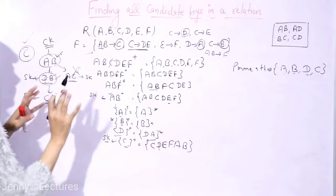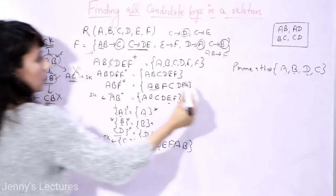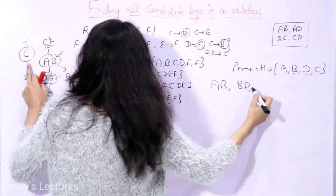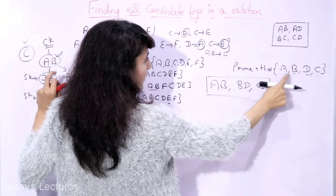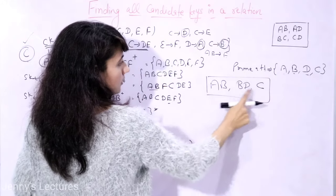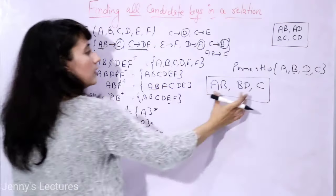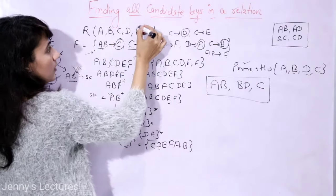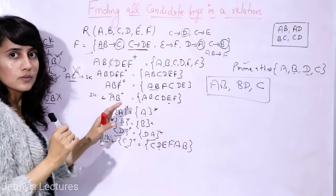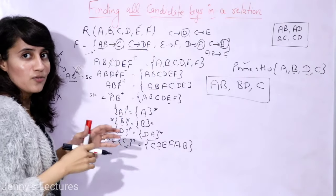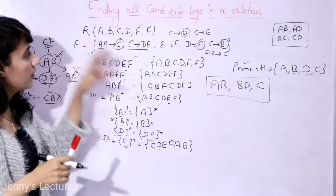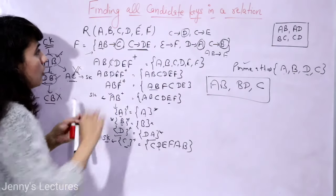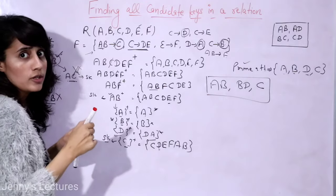So the three candidate keys in this relation are: A, B; D, B; and C. The prime attributes — attributes that appear in candidate keys — are A, B, C, and D. The non-prime attributes are E and F. This is how you find all candidate keys using this trick.